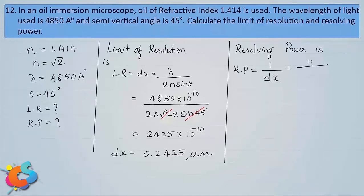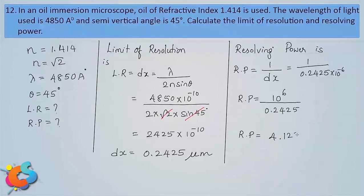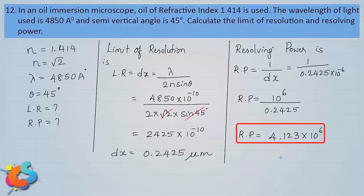Resolving power = 1 / (0.2425 × 10⁻⁶) = 10⁶ / 0.2425 ≈ 4.123 × 10⁶. Resolving power carries no unit since it is the ability of the microscope to resolve two closely lying point objects — it is simply the number 4.123 × 10⁶.